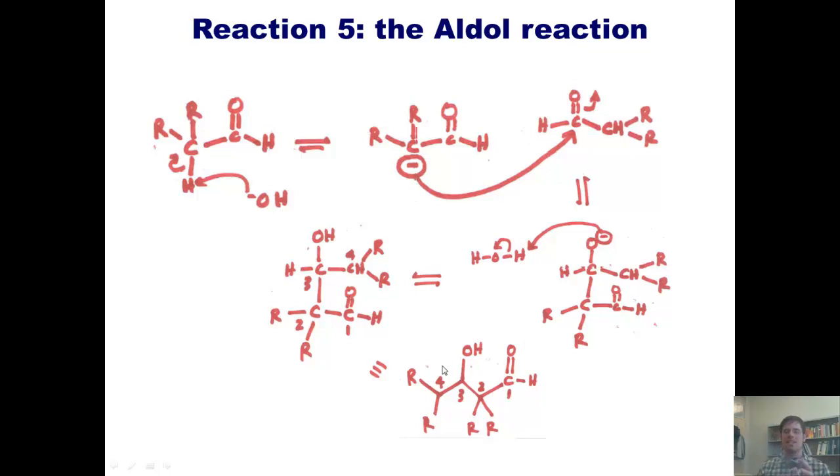Thus, we can say that it's a beta hydroxy aldehyde. In other words, the aldol reaction takes an aldehyde starting material and makes a product that has an aldehyde in it and an alcohol in it. So if I take the two terms aldehyde and alcohol and squish them together, I make the word aldol.